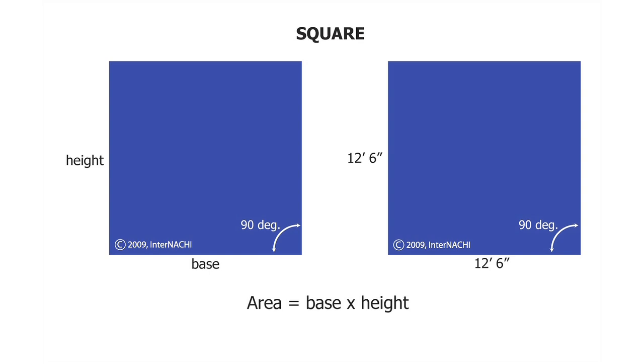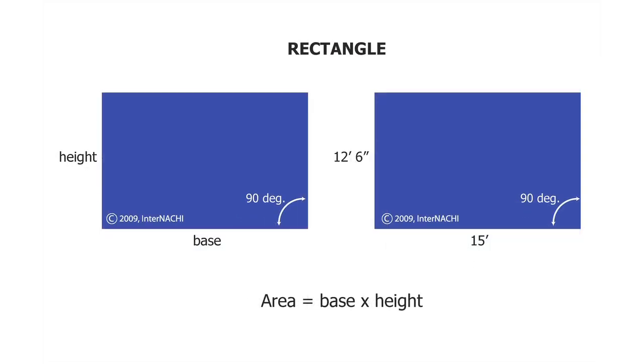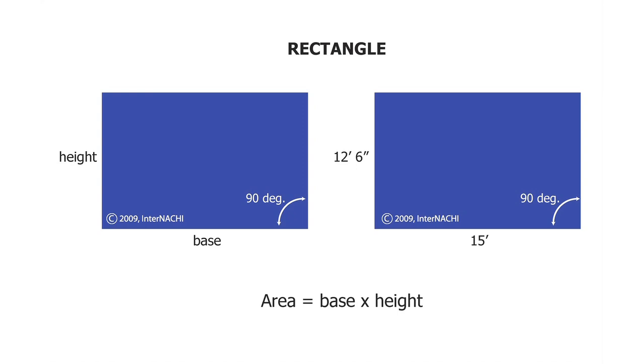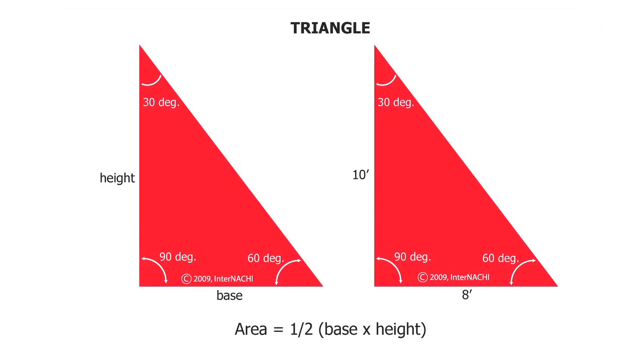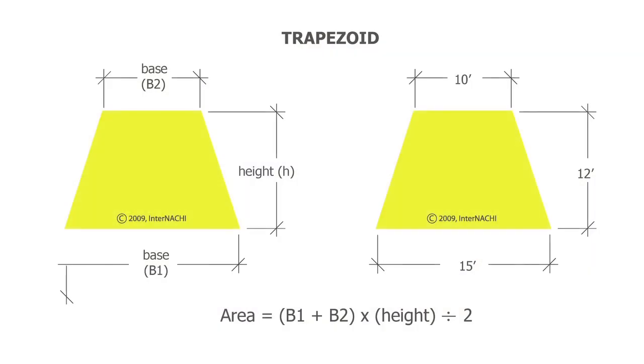In summary, we learned how to calculate the size of a roof by measuring the total square footage and dividing by one hundred. The area of a square is base times height. The area of a rectangle is base times height. The area of a triangle is base times height times one half. The area of a trapezoid is base one plus base two times height times one half. And in roofing terms, a square is one hundred square feet.